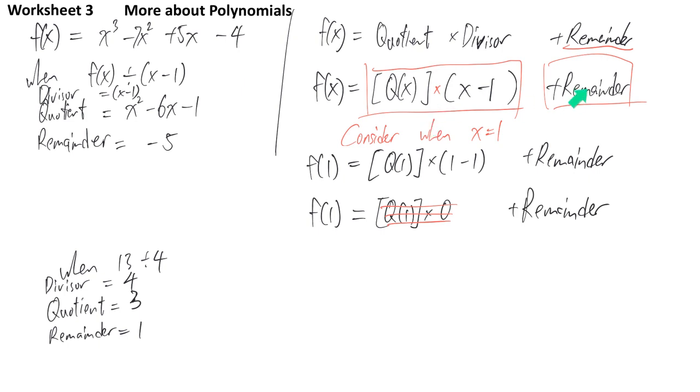Originally there are two terms, but now only remainder is left, so it gives us a hint, if we substitute suitable x to the original function, then that one is our remainder. That's what remainder theorem tells you. So, demonstrate again, is the remainder is equal to f(1).